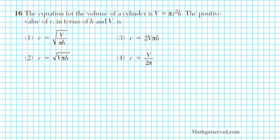It says the equation for the volume of a cylinder is V equals pi R squared H. The positive value of R in terms of H and V is... So what you're being asked to do in this problem is to solve the formula V equals pi R squared H for R. We're going to get R isolated by getting rid of pi and H first, and then lastly getting rid of the square.